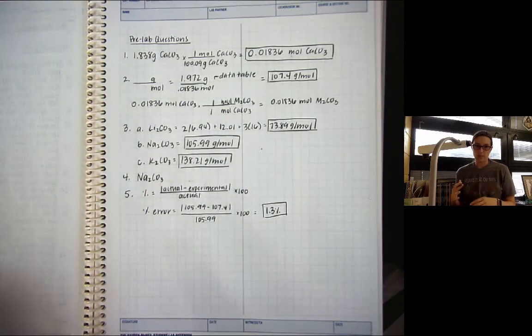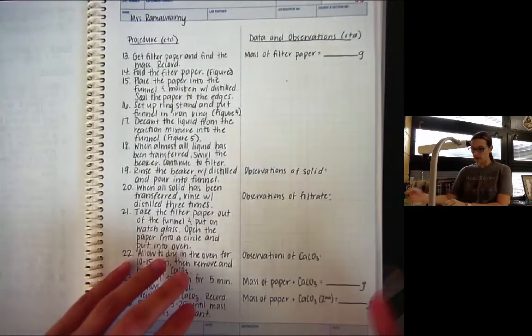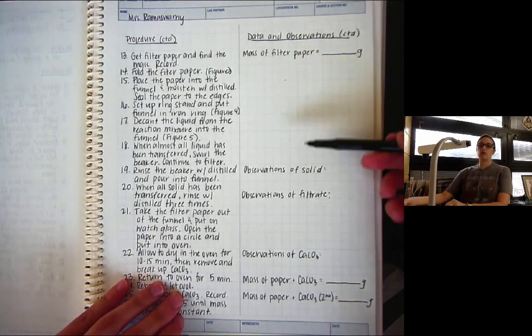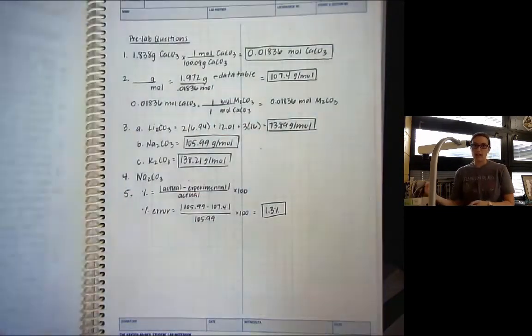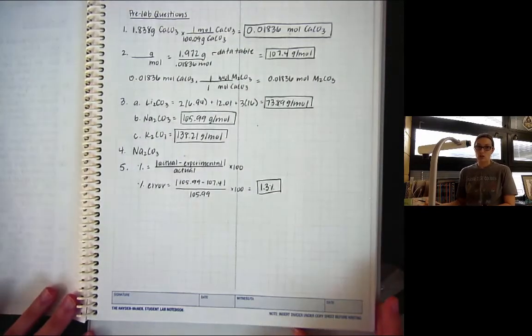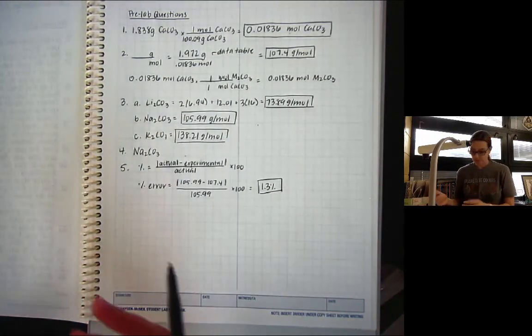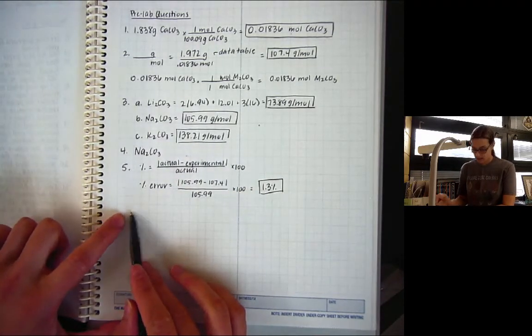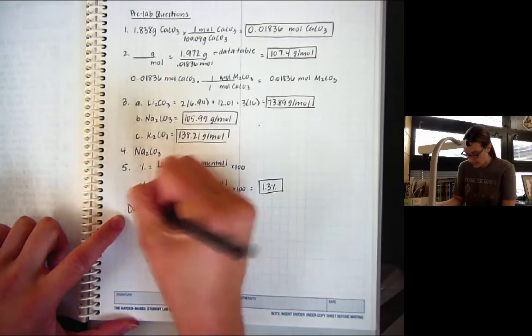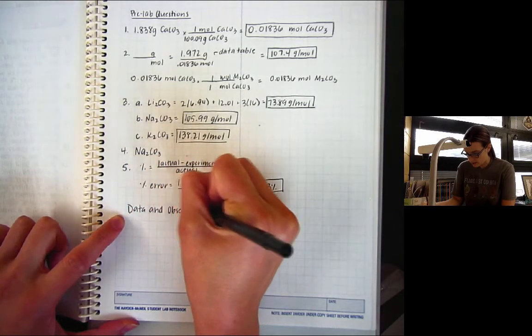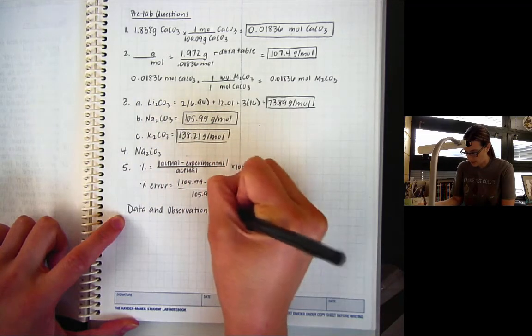So, the very last thing that I want to look at and that I want to show you is where we'll put our data table. So, typically, we do not have space over in this column to put our data table, which is why we continue to collect information. However, a data table is very, very nice to summarize all of our data into. And so, what I'm going to do is I am down here, I'm going to go ahead and put data and observations.